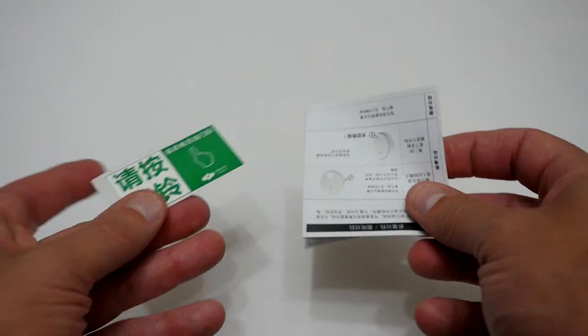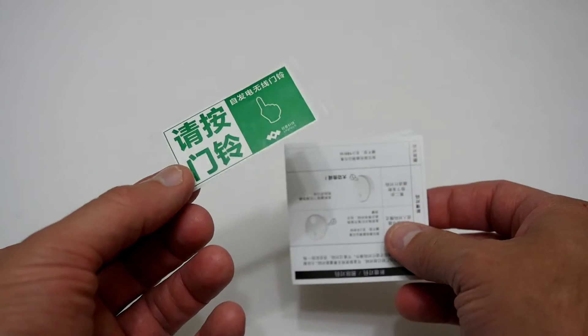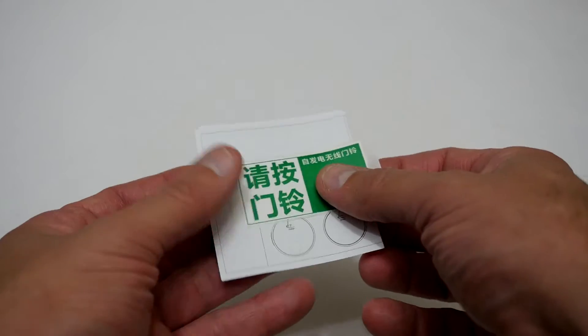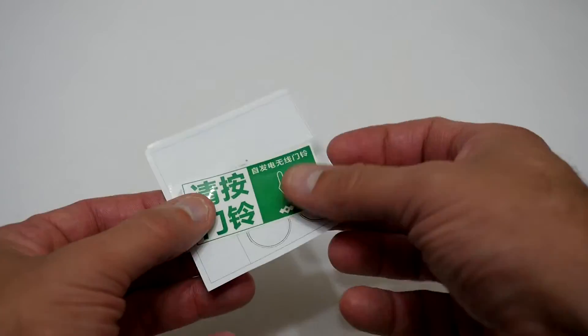Next is a little manual and also a sticker basically telling you to push the doorbell but unfortunately all of these are in Mandarin so they're no use to me but you do get these in the box.